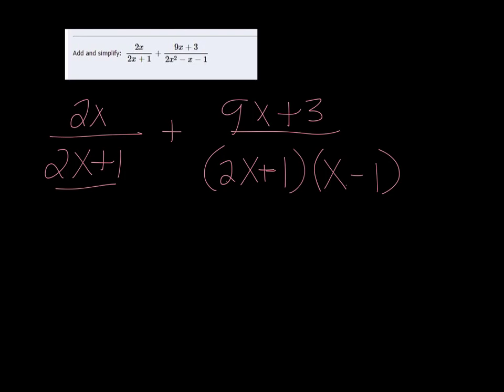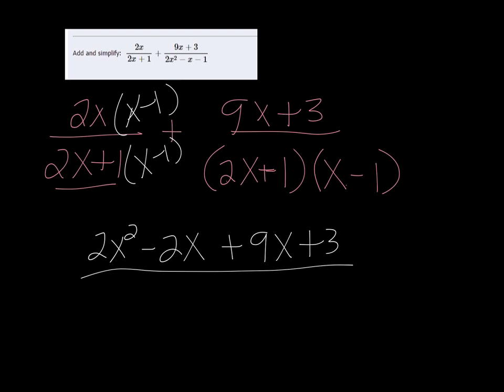So basically what's missing over here is that x minus 1, so I'm just going to multiply the top and bottom by it. And then if I distribute the top, I get 2x squared minus 2x. And this is going to be added to the 9x plus 3. Since they have common denominator, we can put it together over 2x plus 1 times x minus 1.